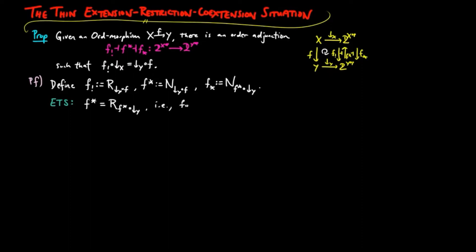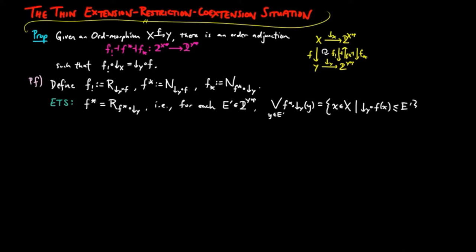In other words, for each downward closed subset e-prime of y, the join of f upper star of the lower segment of y on element y, for y ranging over e-prime, is equal to the set of all elements x such that the lower segment precomposed by f on x is less than or equal to e-prime.